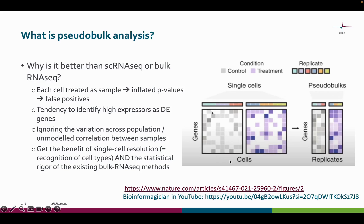Here, each column is an individual cell and its row is a gene. Here, we can see which cells belong to which sample or replicate, and which cells and replicates correspond to which sample group or condition. After aggregation, we will only have one value per each replicate, and the data looks just like bulk RNA-seq data.